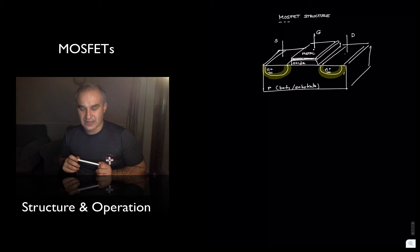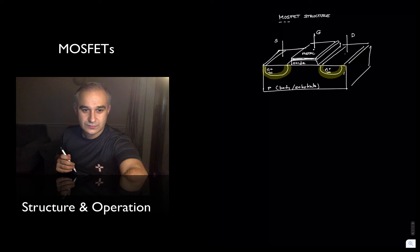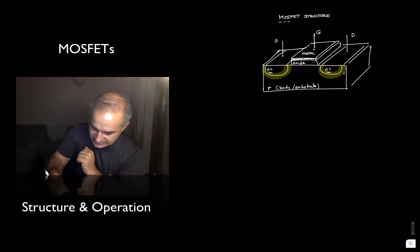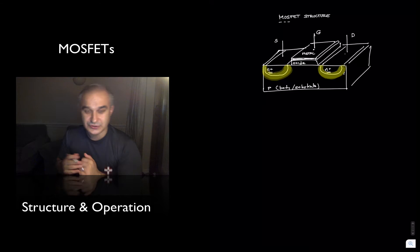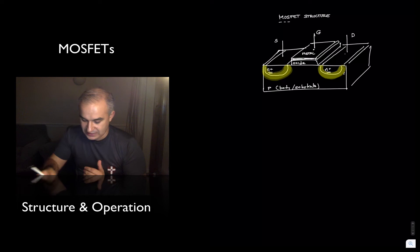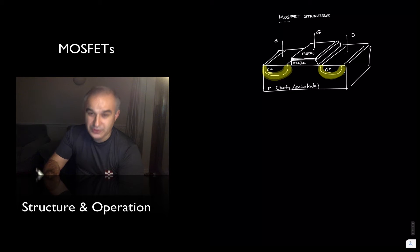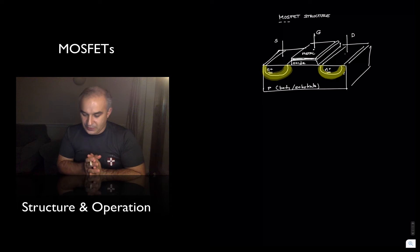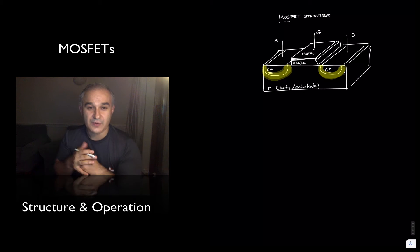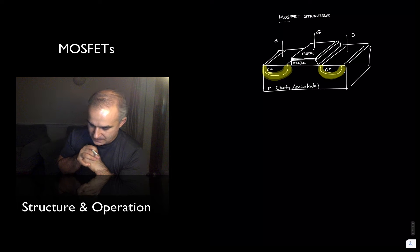Now let's think a little bit about how this device functions — the operation of the device. If we do not bias the device at all, we can see that in the PN junctions we are going to have a depletion region form. If you need some background or review, just check the video on the PN junction. Basically, what happens is that you have electron flow from the N region to the P region, where they recombine and create ions. Those ions create an electric field that prevents any further diffusion. So nothing much interesting there.